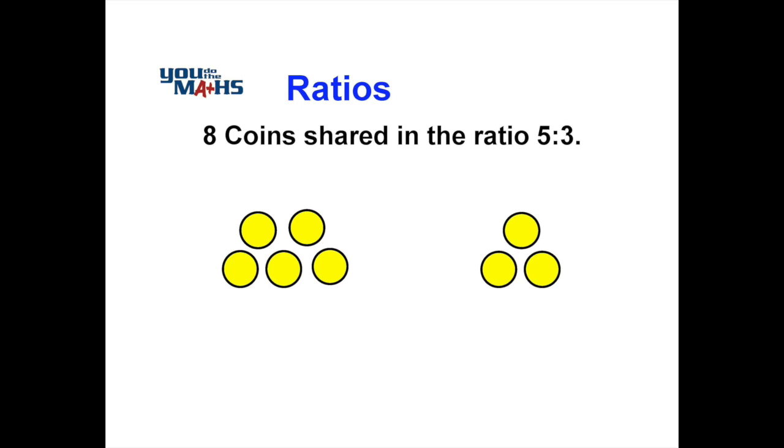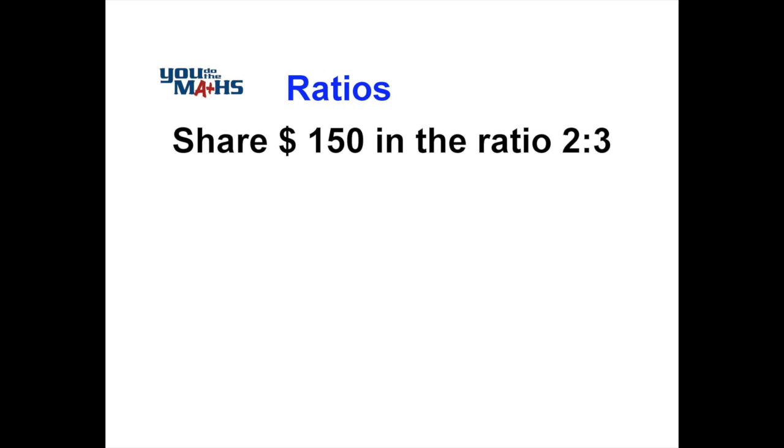What if it's not so simple though? What if we've got an amount that doesn't add up nicely to, in this case, eight? So we wanted to split up $150 in the ratio of 2:3. Maybe one person works two times a week and another person shares the job and works three times a week. So a bonus amount of $150 may need to be shared between them.